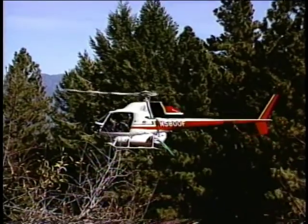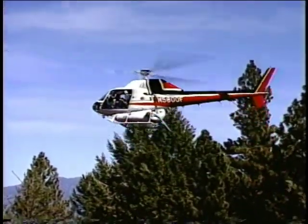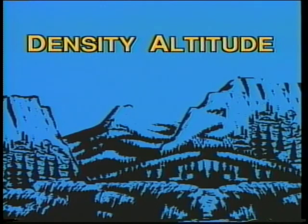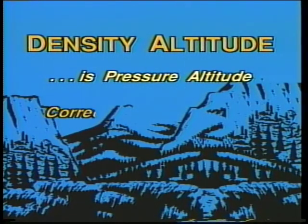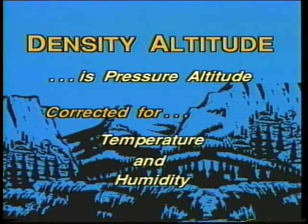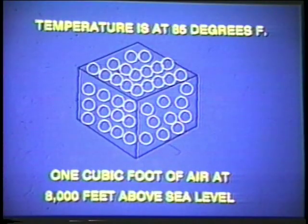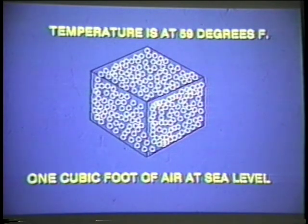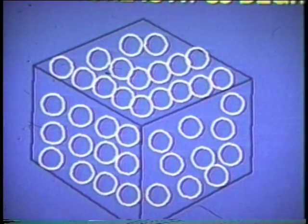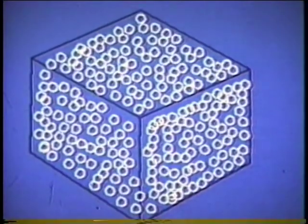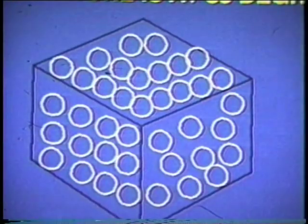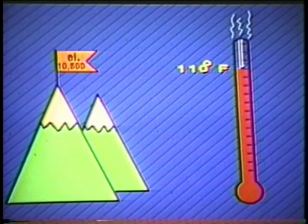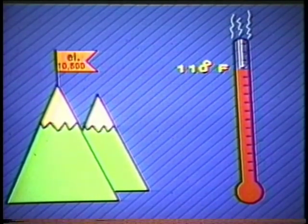Now let's talk about density altitude and its effect on aircraft performance. Density altitude by definition is pressure altitude or elevation corrected for temperature and humidity. Air is said to be thin at higher elevations — that is, there are fewer air molecules per cubic foot at 10,000 feet than there are at sea level. Also, as air is heated, it expands and you can get fewer molecules of warm air in one cubic foot than cool air. In effect, warm air is also thin. So as you go up in altitude and temperature, density altitude also goes up.